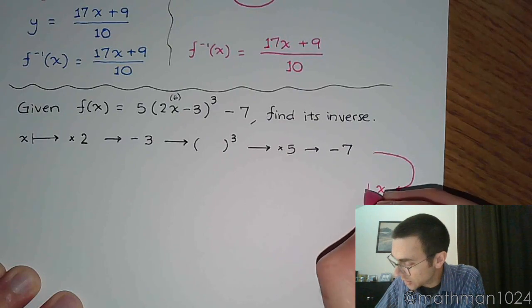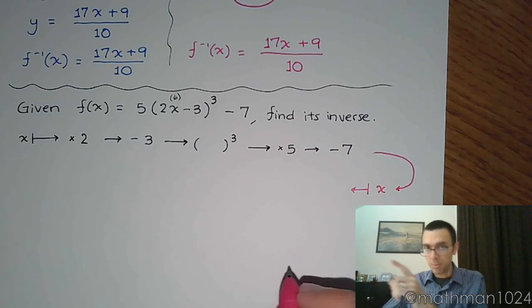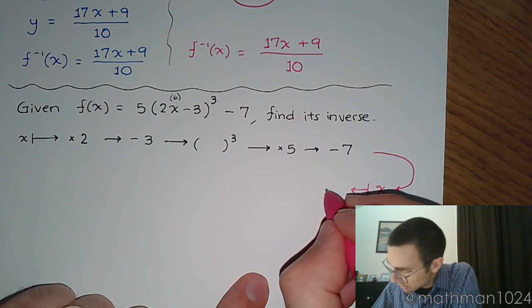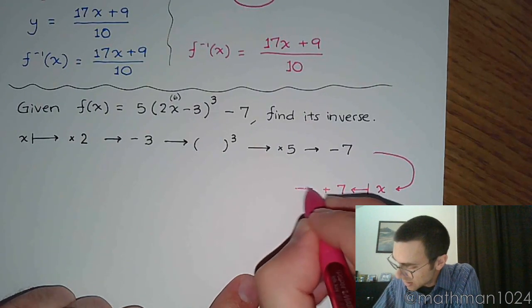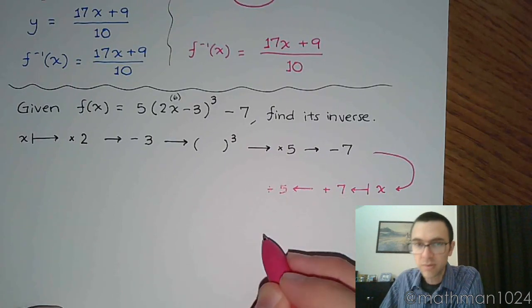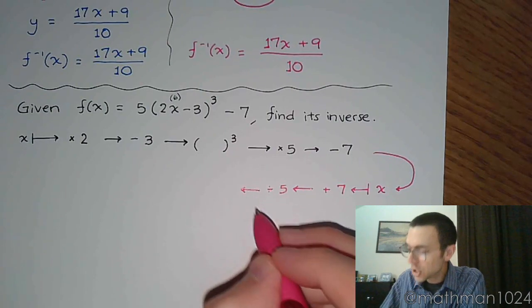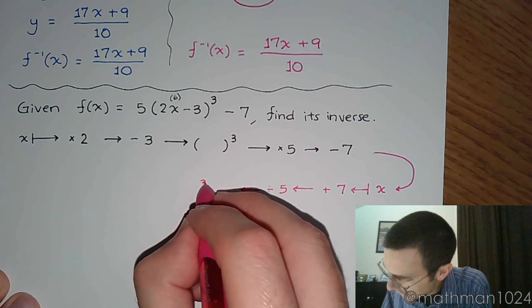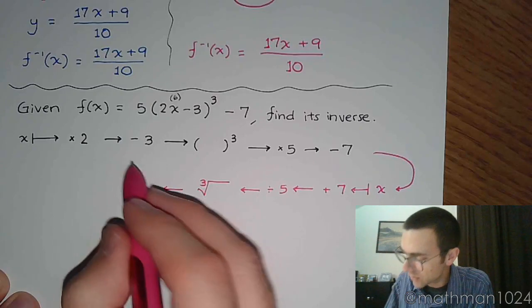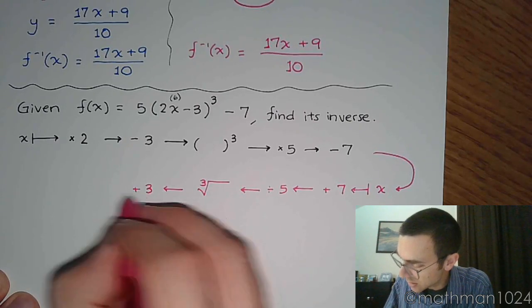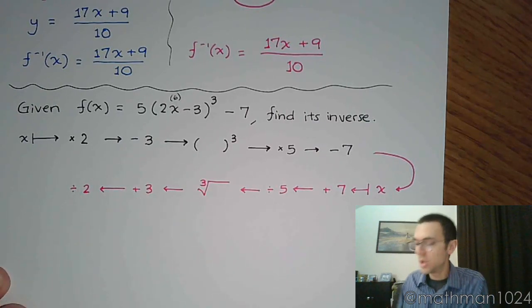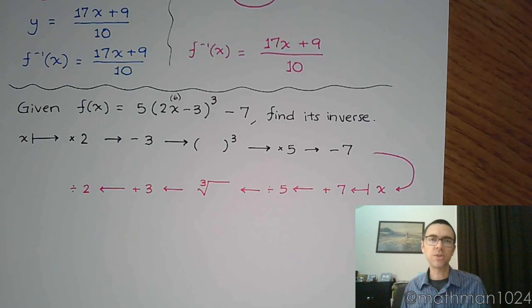So if I start with x over here, and let's go backwards. Let's take each of these steps in a backwards order and do the inverse operation for each one. So the inverse of minus 7 is plus 7. The inverse of times 5 is to divide by 5. Then the inverse of cubing something is to take the cube root, like that. Then what? Well, the inverse of minus 3 is plus 3. And the inverse of times 2 is to divide by 2. That's what the backward steps for the order of operations would say.